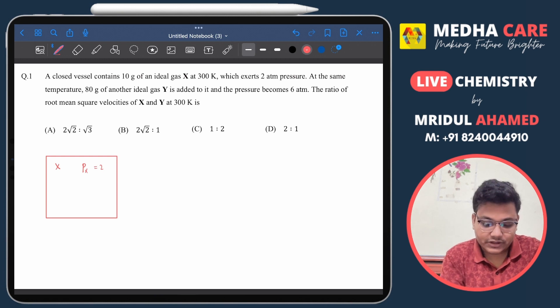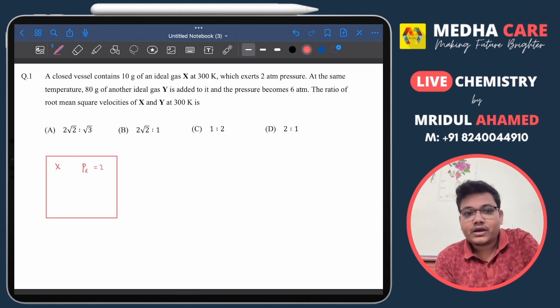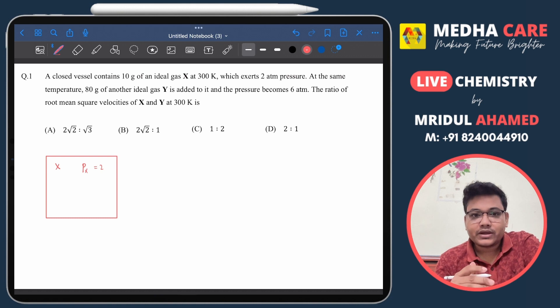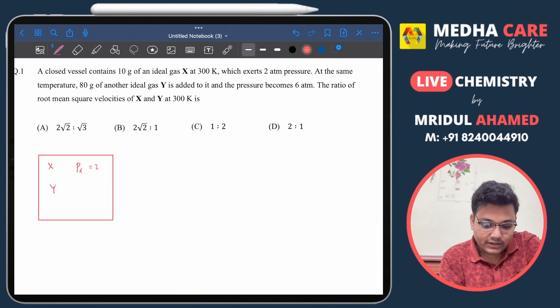Okay, partial pressure of X is 2 atm. And at the same temperature, 80 grams of another gas Y is added and then pressure becomes 6 atm. So after adding the gas Y, the pressure becomes 6 atm. That means the pressure increased for Y only is 4 atm. So we can say that the partial pressure of Y is actually 4 atm.